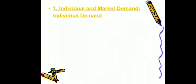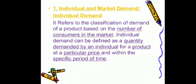Individual and market demand — what are these? Individual and market demand can be classified on the basis of the number of consumers in the market. Individual demand can be defined as the quantity demanded by an individual for a product at a particular price and within a specific period of time.